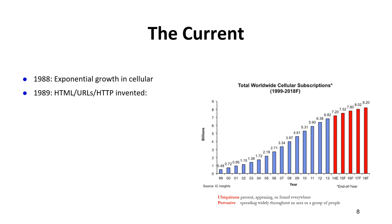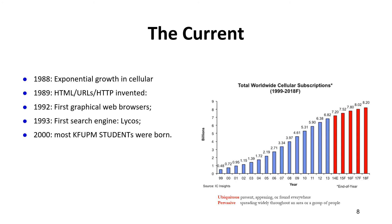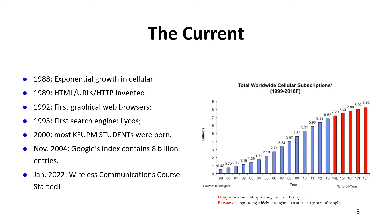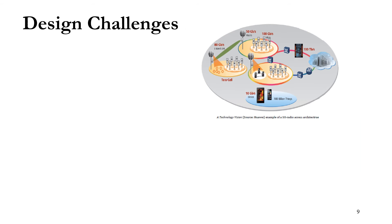In 1988 exponential growth in cellular was observed. In 1989, the first web browser with hypertext transfer protocol was introduced, followed by the first graphical web browser and first search engine. By 2000, most undergraduate students of this course were born. In 2004, Google's index had eight billion entries. As of January 2022, we are seeing dramatic growth in wireless applications and usage, and we expect things to improve dramatically further.